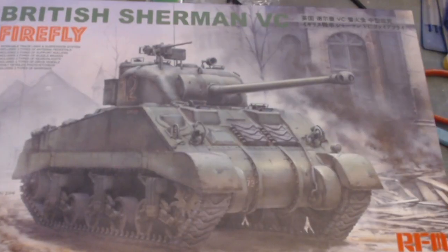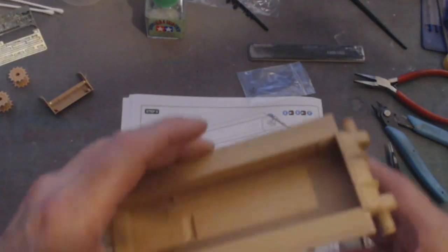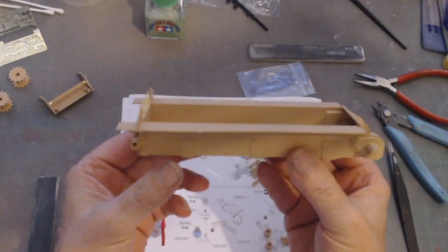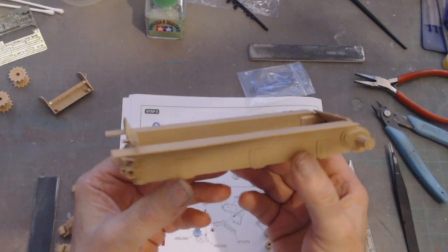So the British Sherman 5C Firefly from Rye Field Models, where are we at? I have the lower hull done. Well, I said done - I have parts of the hull done.